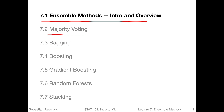We'll cover majority voting, the simplest type of ensemble method. Then we'll talk about bagging, which does bootstrap sampling on the training set. Then we'll look at boosting, where we boost weak learners — for example, small decision tree stumps — to very strong learners. Then we'll talk about a particular type of boosting called gradient boosting, which is one of the most popular algorithms these days in traditional machine learning and often wins Kaggle competitions.